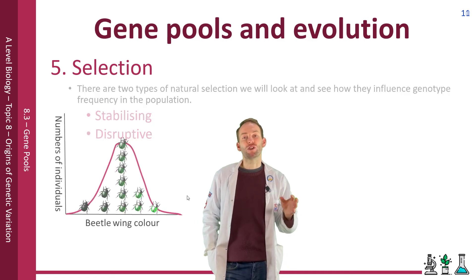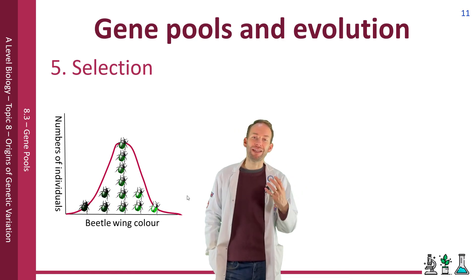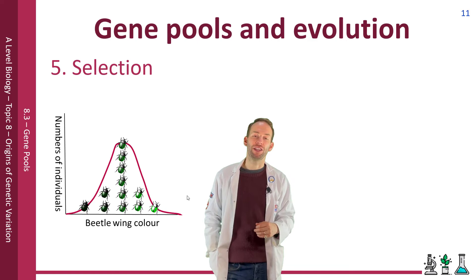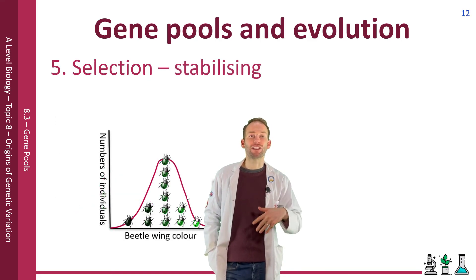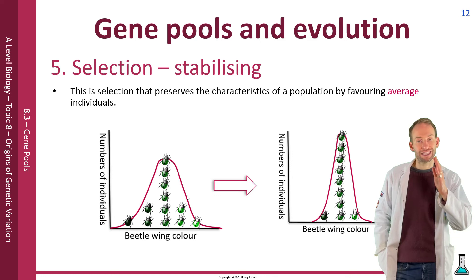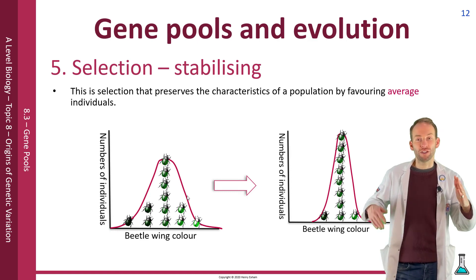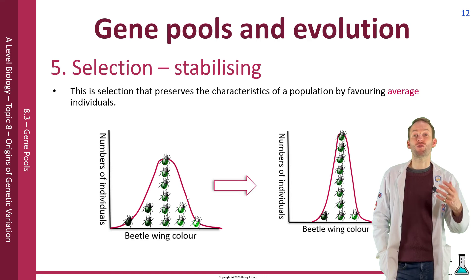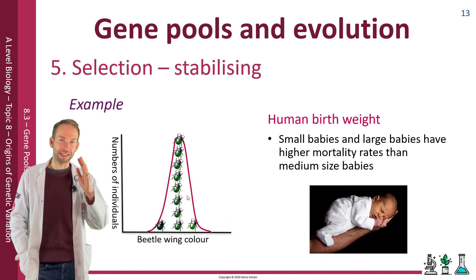With any population there's a range of variation. The majority of the population will be somewhere in the middle — the mean — and then you get a few at the extremes. For example, with beetle wing colour, we expect most to be average, but due to mutation or slight variations, we get a few either side. Stabilising selection occurs when the average is favoured by natural selection — the middle-coloured beetles may be better camouflaged, they are selected for, and the others are eaten by predators and die out, so the graph gets bigger around the middle. An example of this is human birth weight, where large babies and very small babies have higher mortality rates, so medium-sized babies are selected for.